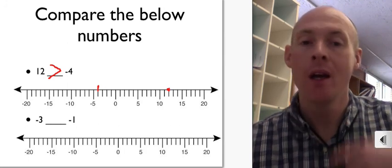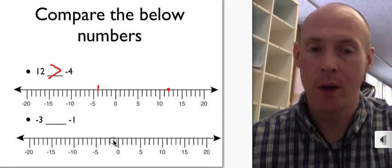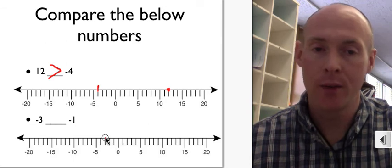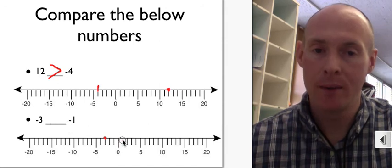Okay. You should have plotted where they are, but let me plot them. So negative 1, negative 2, negative 3, I will plot negative 3 there, and negative 1. So negative 1 is right there.